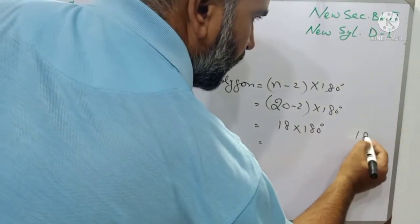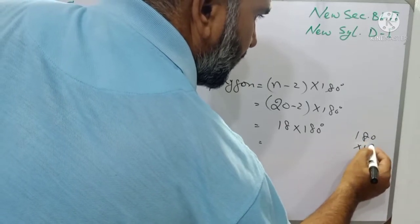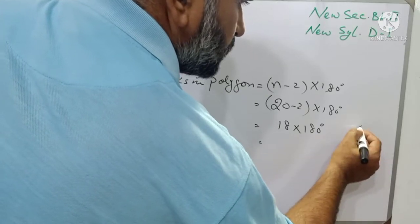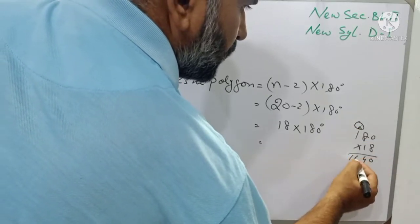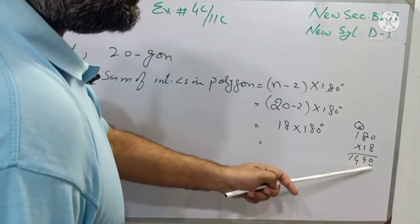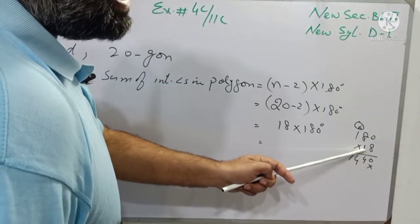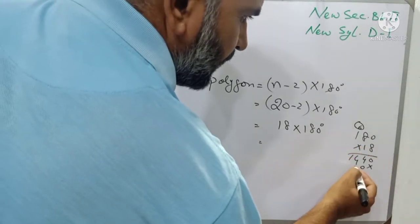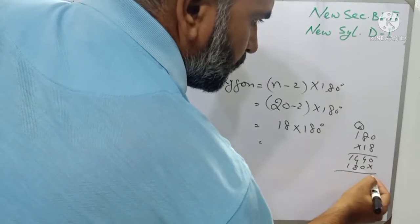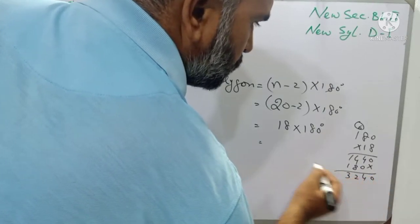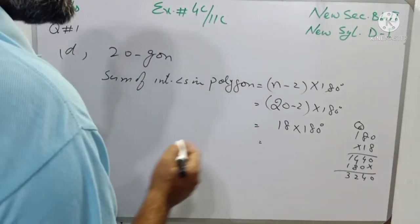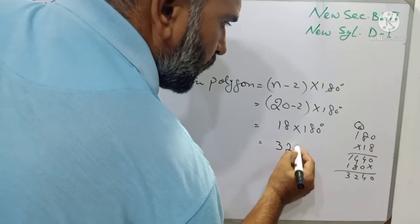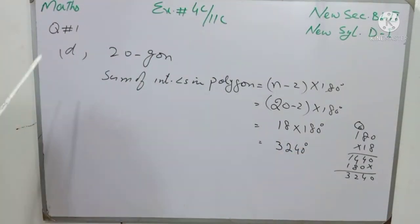If you don't have a calculator, write 180 multiplied by 18. 8 times 0 is 0, 8 eights are 64, carry 6. Put the cross below the unit digit, then multiply by the tens digit: 1 times 0 is 0, 1 times 8 is 8, 1 times 1 is 1. So 0, 4, 2, 3 — the sum of interior angles in the 20-sided polygon is 3240 degrees. That is Question 1 of Exercise 4C.